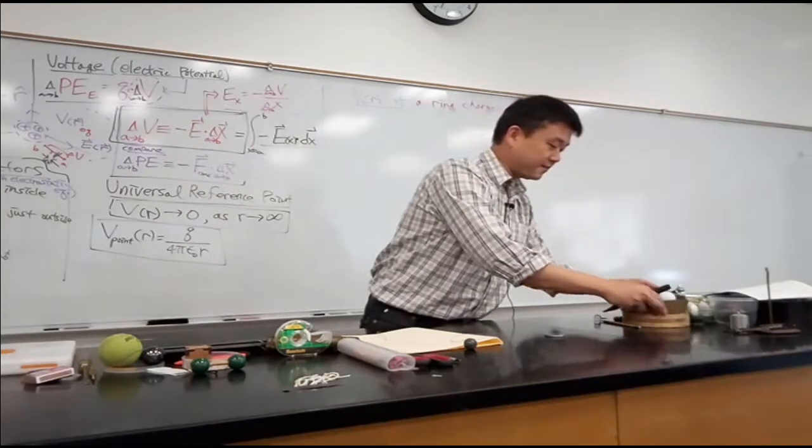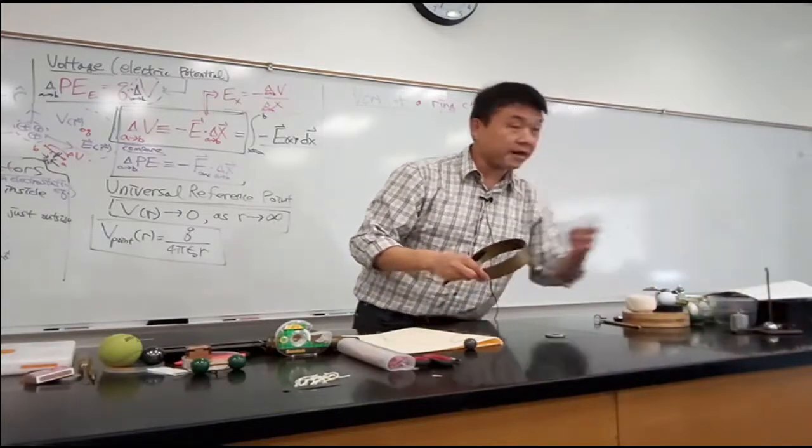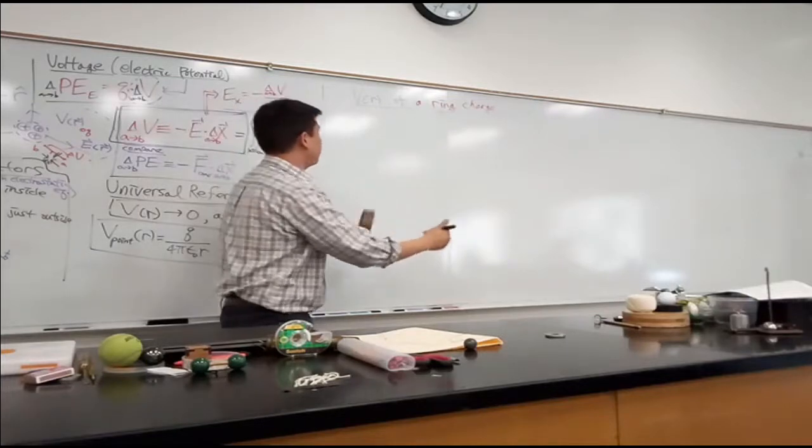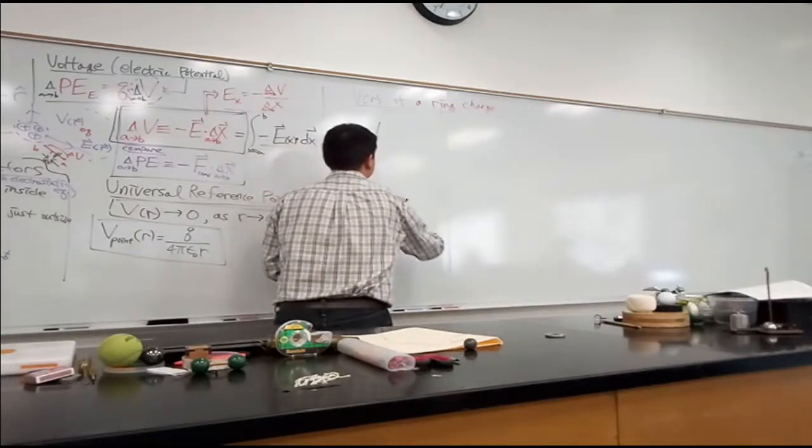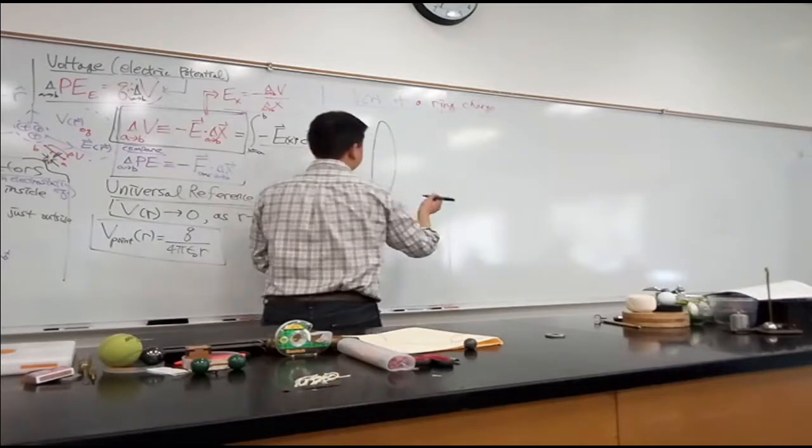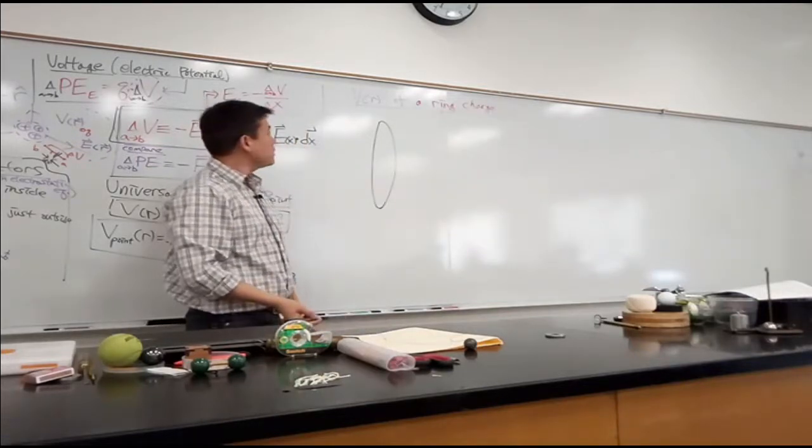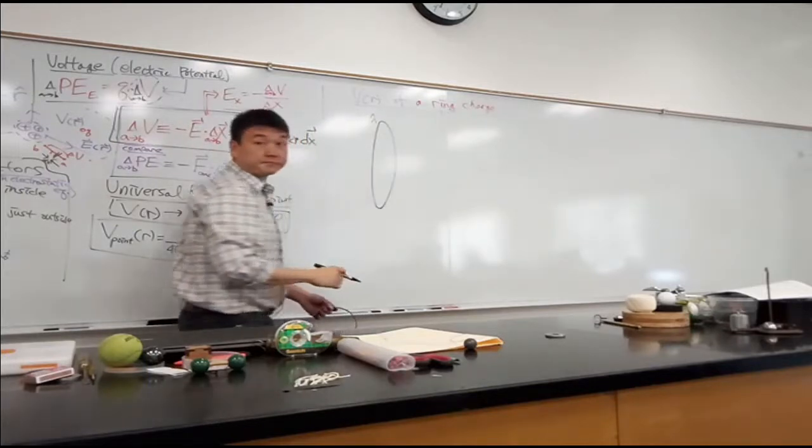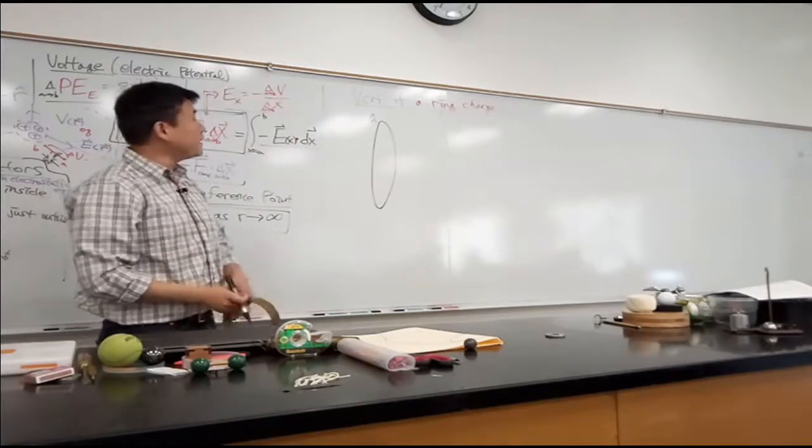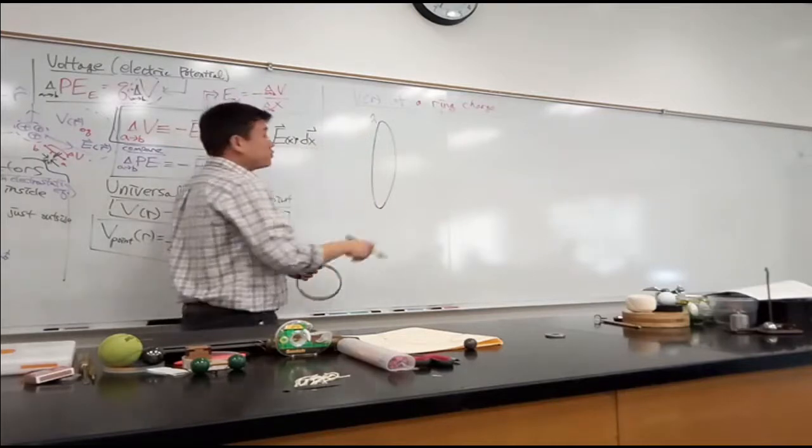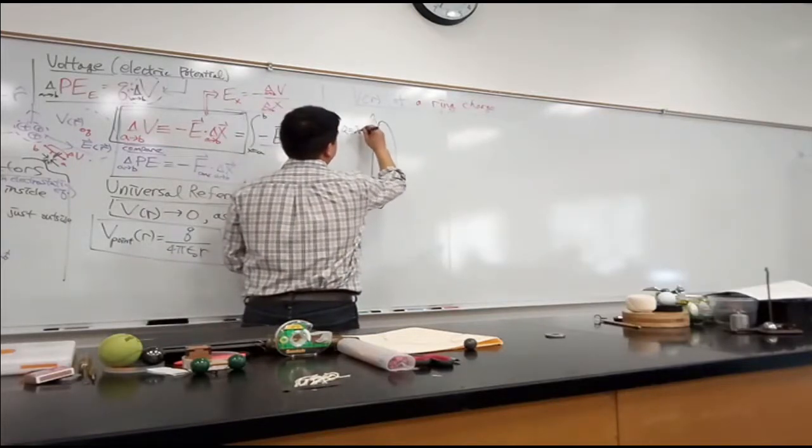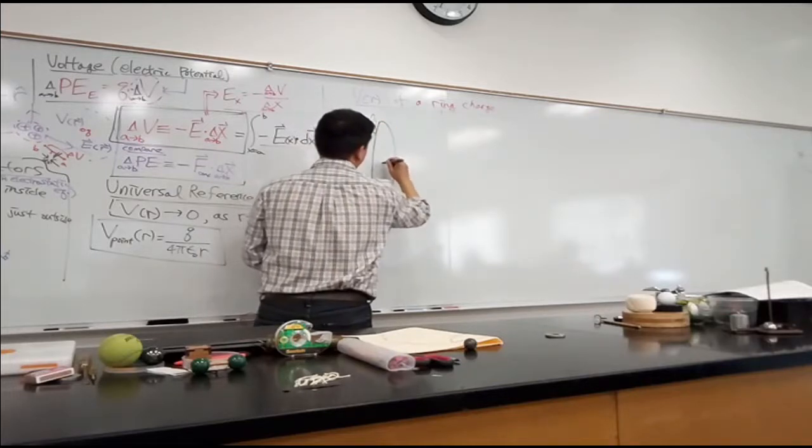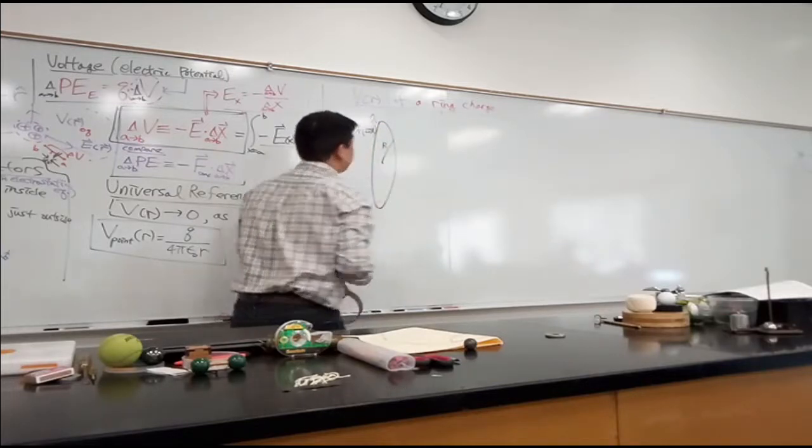So this is what the setup looks like. Imagine you have a ring of charge. Let me draw a ring of charge like this. Here's the ring of charge, and let me make it easy for myself, charge density lambda. So if you wanted to relate it to the total charge, you could say that the total charge is lambda times 2πr, where capital R is the radius of the ring charge.